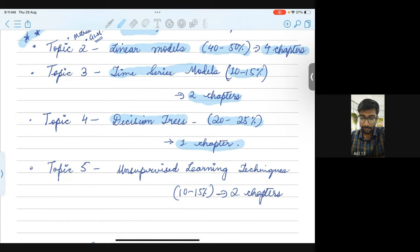And lastly, then you have this topic number 5 which is consisting of 2 chapters with a weightage of 10 to 15%. What is it? It's unsupervised learning techniques. Within that, you would expect 2 topics. One is called PCA, the principal component analysis and then you will have cluster analysis. These are the 2 chapters which come under unsupervised learning techniques.